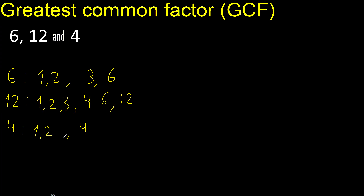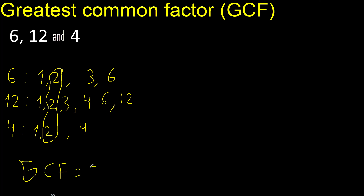Factors. The largest number that repeats is 2. Therefore, the GCF is 2. The factors listed are 2, 2, 2, 3, 4.